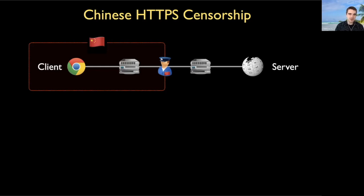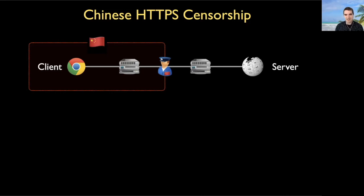For HTTPS specifically, I want to note that we have discovered in the past that China does have two separate middlebox systems working in concert to perform censorship — one to censor connections via the server name indication field, SNI, and one to censor ESNI. The focus of today's talk is on their SNI-based censorship middleboxes. So for the rest of this talk, when I say HTTPS censorship, what I mean is SNI-based censorship.